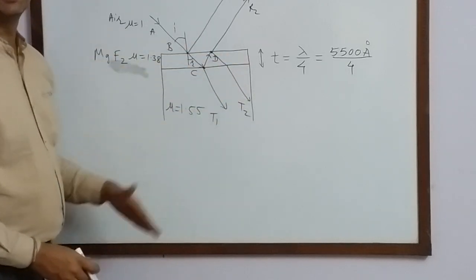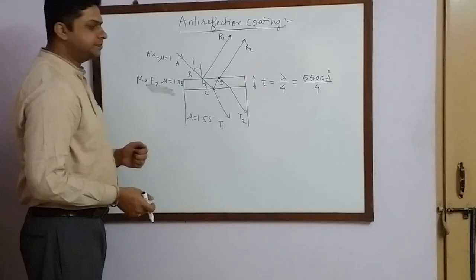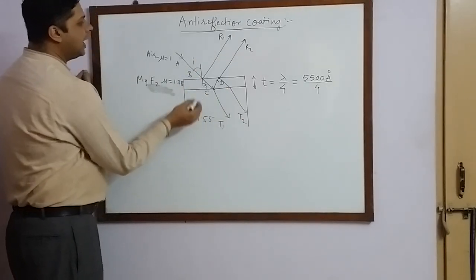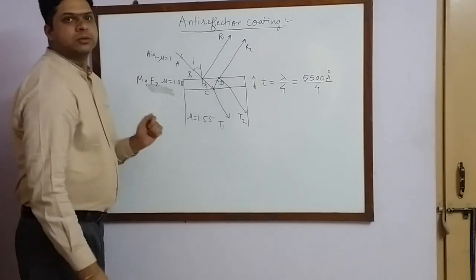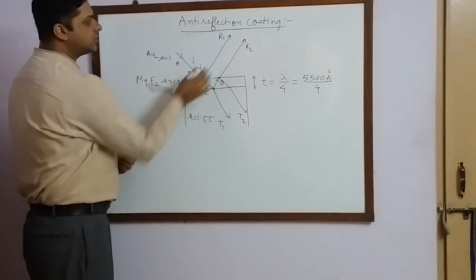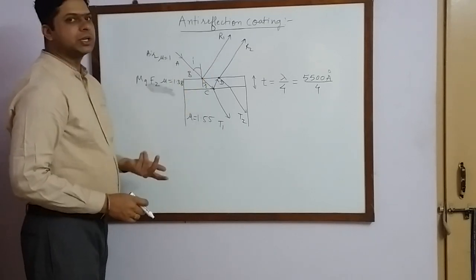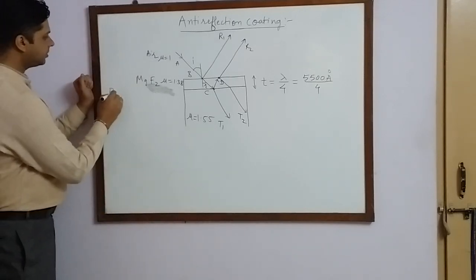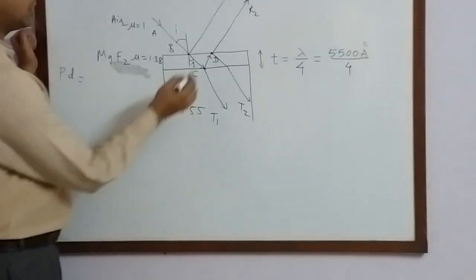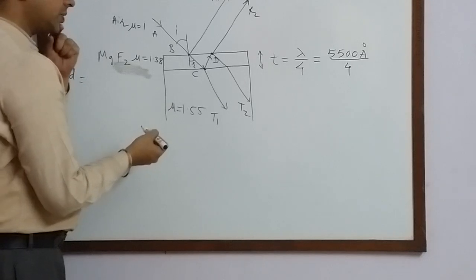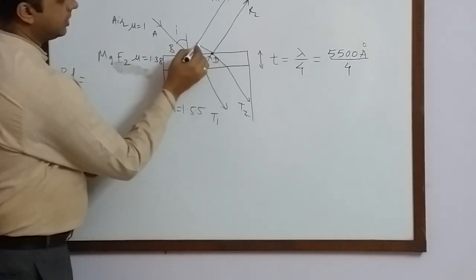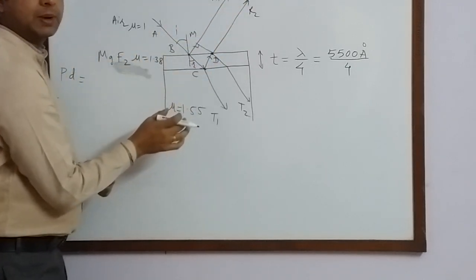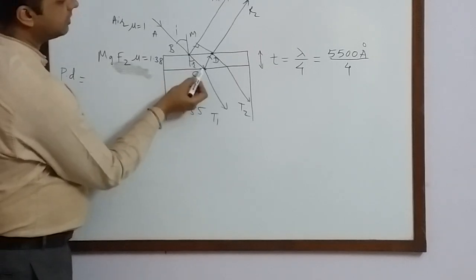Rays CT1 and ET2 are the two rays transmitted through the film of MgF₂. Since the rays in both the reflected and transmitted systems are obtained from the single incident source, they are coherent in nature. Since they are coherent, they will interfere either constructively or destructively depending upon the path difference between them. To find the path difference, we draw a perpendicular from ray DR2 onto the path of ray DR1.